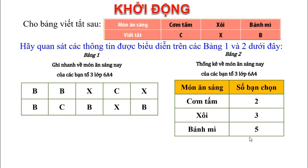Vậy, dựa vào đâu để có được thông tin này? Chúng ta dựa vào bảng 1. Từ bảng viết tắt, ta biết món cơm tấm viết tắt bởi chữ C. Trong bảng 1 đếm được 2 chữ C, tương ứng 2 bạn chọn cơm tấm. Món xôi ký hiệu bởi chữ X, đếm được 3 chữ X. Bảng 1 còn 5 chữ B, là viết tắt của bánh mì, nên số bạn chọn bánh mì là 5 bạn.